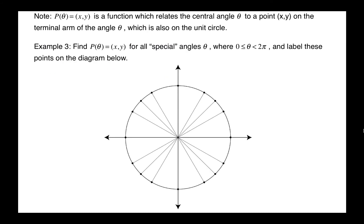Here's the last example. We say that P of theta equals x and y. This is a function which relates the central angle theta to a point (x, y) on the terminal arm of that angle theta, which is also on the unit circle. And we want to do that for all the special angles.